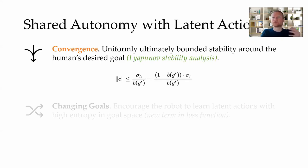We show that this approach ensures the robot converges to the human's high-level goal, even if the human is bad at controlling the robot. Applying Lyapunov stability analysis, the error between the robot's state and the human's goal is uniformly ultimately bounded. And the size of that bounding ball decreases as the robot's confidence in the human's goal increases.